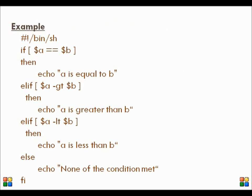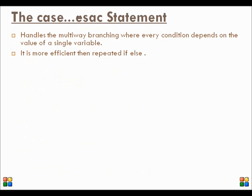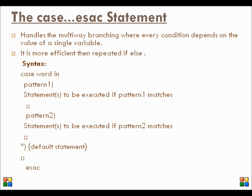Let us see an example with two variables a and b. First we compare them — if they are equal, we display that both are equal. Then we check in the else-if statement if a is greater than b, and accordingly display that a is greater than b. Then we have another else-if statement to check if a is less than b. If none of these conditions are satisfied, we have an else statement. The case-esac statement handles multi-way branching where every condition depends on the value of a single variable. It is more efficient than repeated if-else. The word is matched with every pattern available — if it matches, corresponding statements are executed; otherwise, statements in the default block are executed.